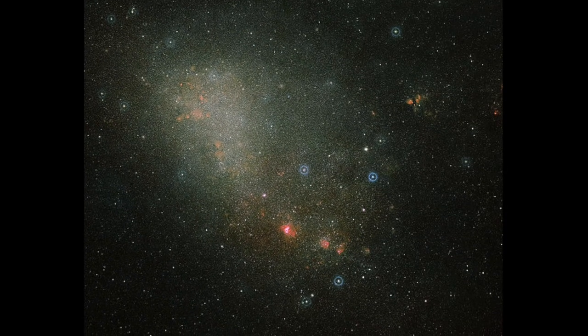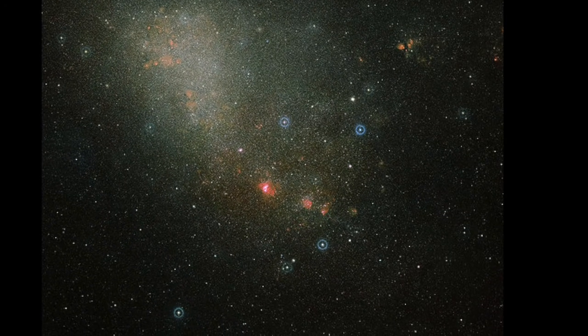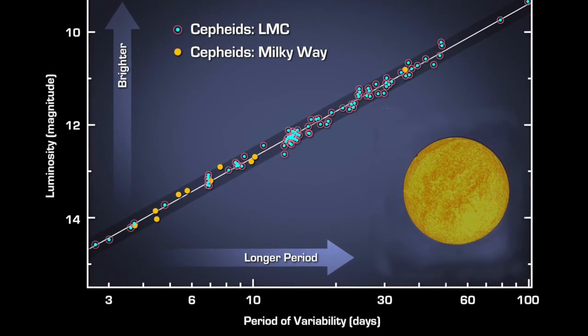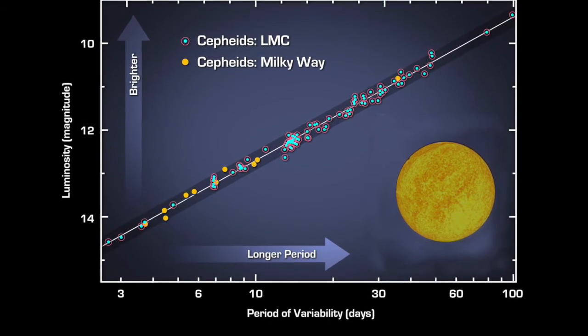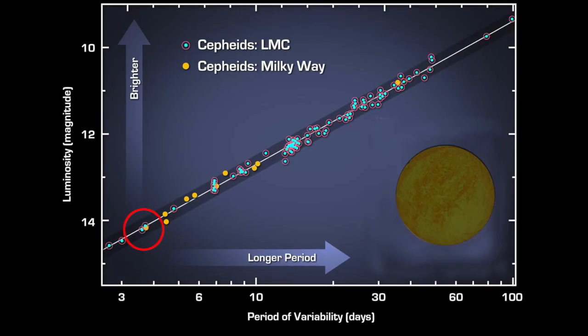At the time, Leavitt was studying Cepheids located in the Small Magellanic Cloud, a nearby dwarf galaxy. She noticed that there seemed to be a direct relationship between the period of a Cepheid and its brightness. The Cepheids with the longest periods had the highest average brightness, while those with very short periods were generally quite dim.